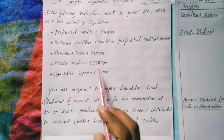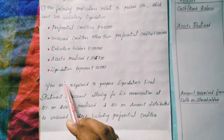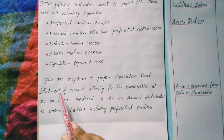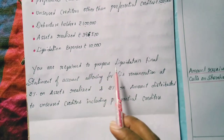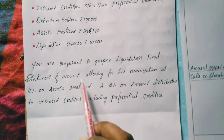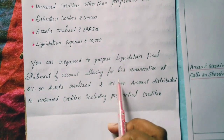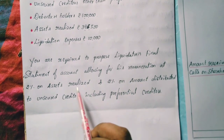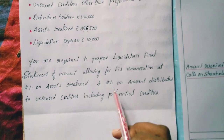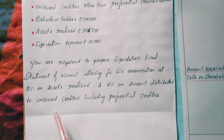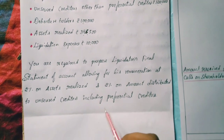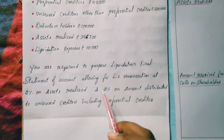Assets realized Rs.3,96,500. Liquidation expenses Rs.10,000. You are required to prepare the liquidation final statement of accounts, allowing for liquidator's remuneration at 2% on assets realized and 2% on amount distributed to unsecured creditors including preferential creditors.